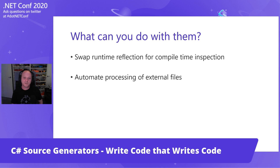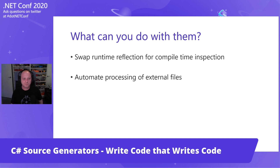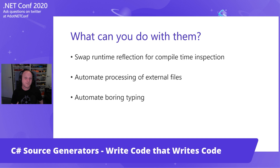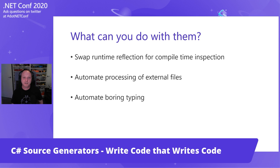The second bucket is processing external files. Source generators can access other files in your projects, so you might use them to generate strongly typed wrappers for XML, JSON, or CSV files. And basically, you can also use them to automate things — if you're going to implement INotifyPropertyChanged or create dependency properties for all your normal properties, things like AutoMapper exist for the same reason. Sometimes it's just boring, repetitive, or error-prone to write code, and just the act of generating could be the win.